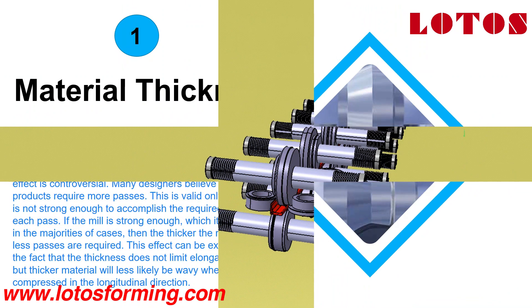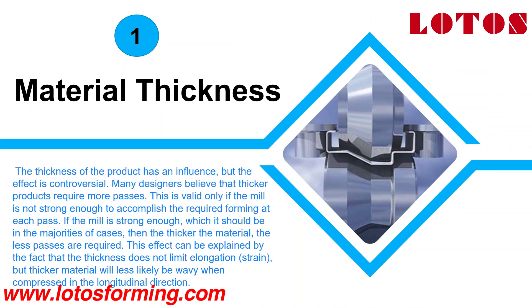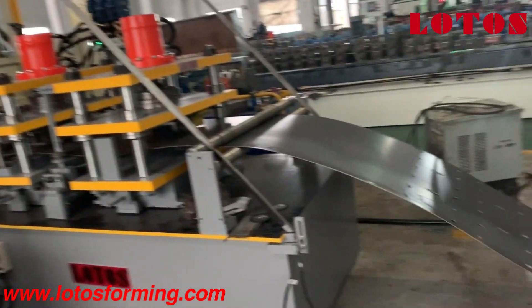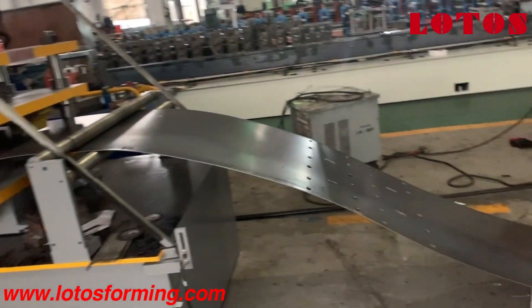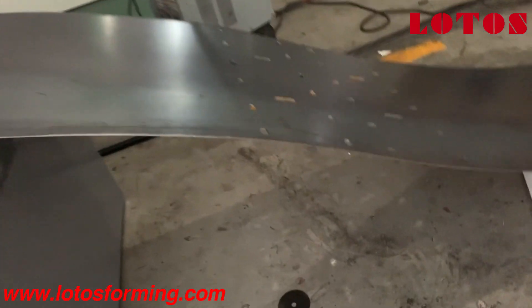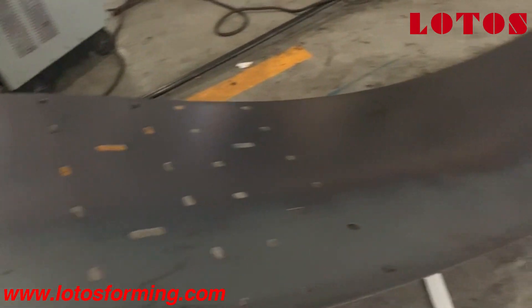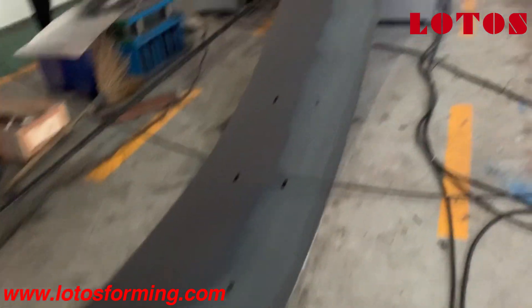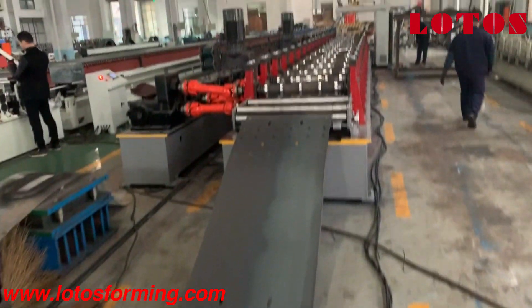Material thickness. The thickness of the product is an influence, but the effect is controversial. Many designers believe that thicker products require more passes. This is valid only if the mill is not strong enough to accomplish the required forming at each pass.